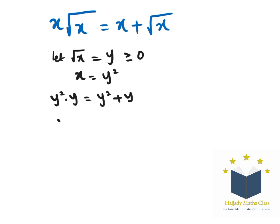So here I'm having y³. Collecting like terms: y³ minus y² minus y equals zero.